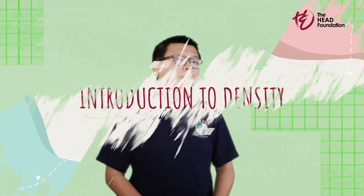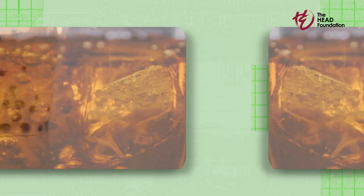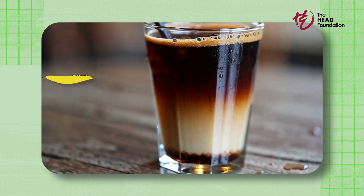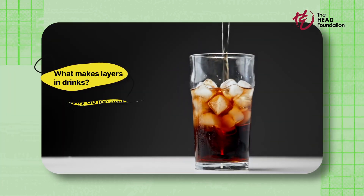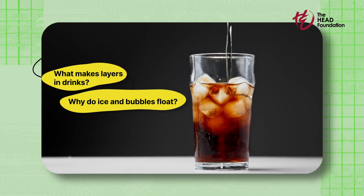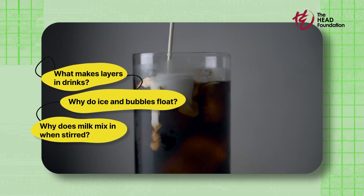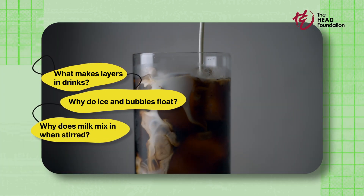Let's think about the drinks we see in daily life — three-layer tea, bubble tea, or iced tea. To spark our students' curiosity, you may ask them: What makes these drinks form these beautiful layers? Why do ice and bubbles float? And why does milk mix in with the drink when we stir it? The answer lies in density.